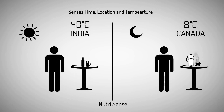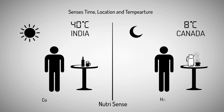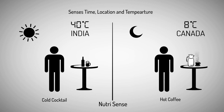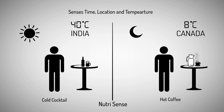We have an algorithm called Nutrisense which tells you what exactly to eat. We scan your time of the day, the location where you are, and the temperature of the day, and tell you what exactly to eat.